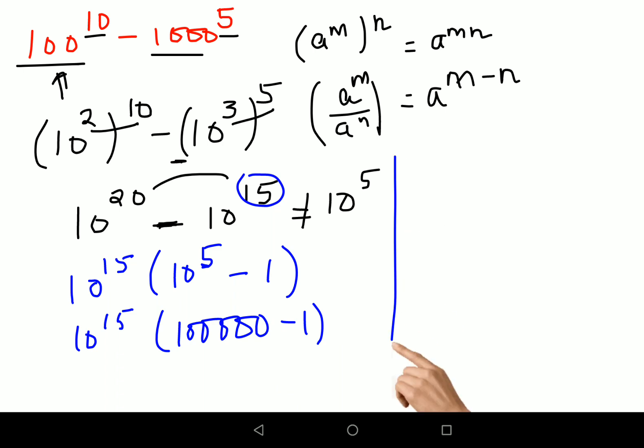So this now eventually comes out to be 10 raised to 15 into, so this is how much? This is 100,000 minus 1, so that gets you 99,999. With this, my dear friends, can be your answer.